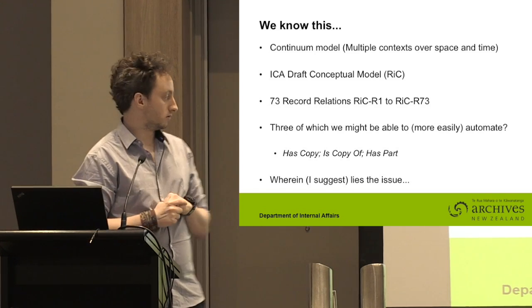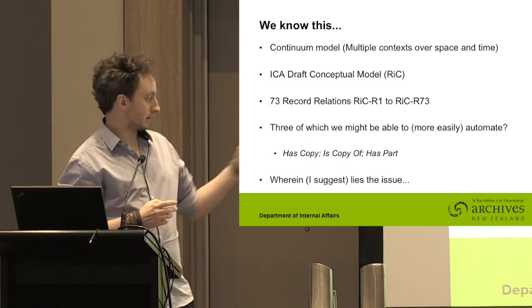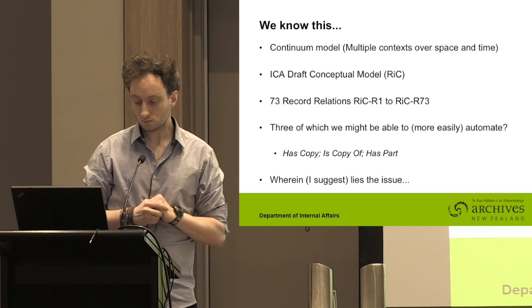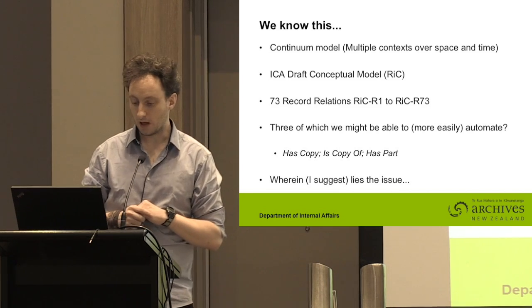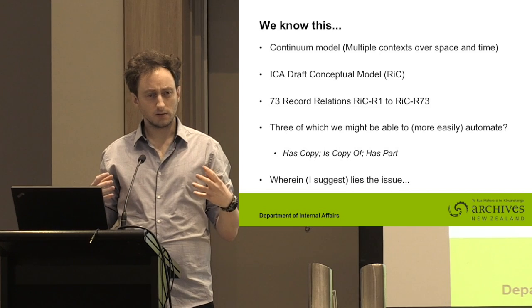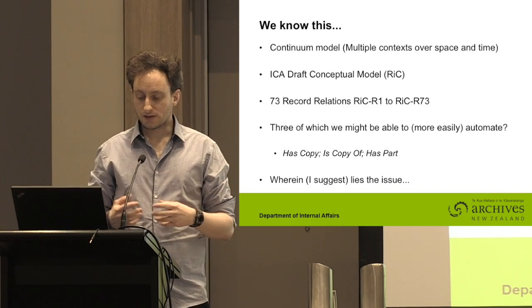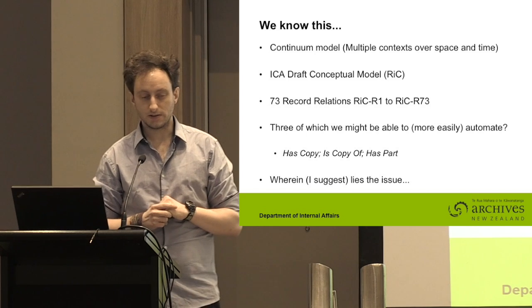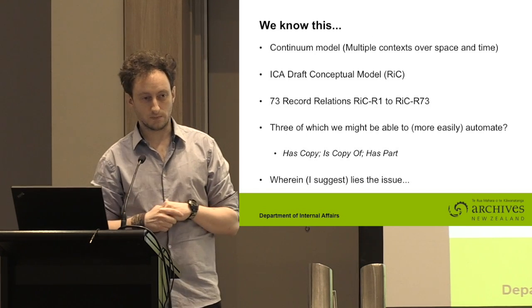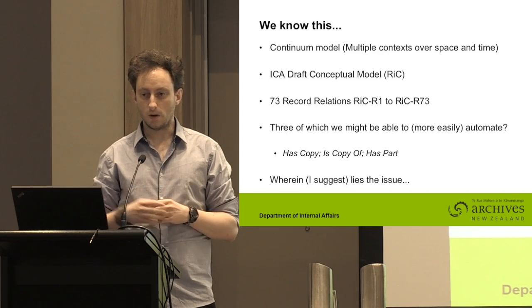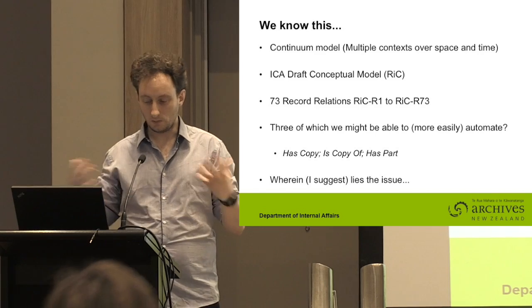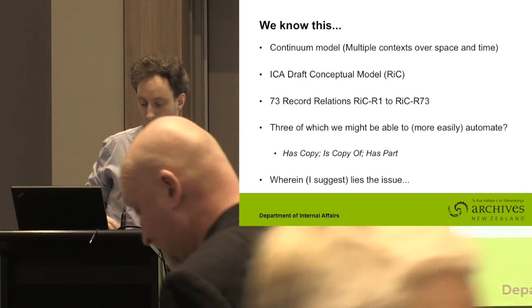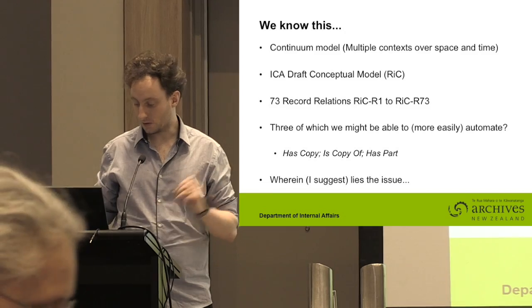But there's a problem: there are 73 relationships that the ICA asks us to talk about, but I can only see three — without hurting my brain too much — that I think I might be able to automate: has copy, is copy of, and has part. The purpose of this paper is that 73 is a really ambitious task, and we need to think about commodity ways of automating the descriptive process where, in the interim, we haven't got the resource to describe things manually, and we can use automatic relationships to help drive discovery all along the life cycle of a record.